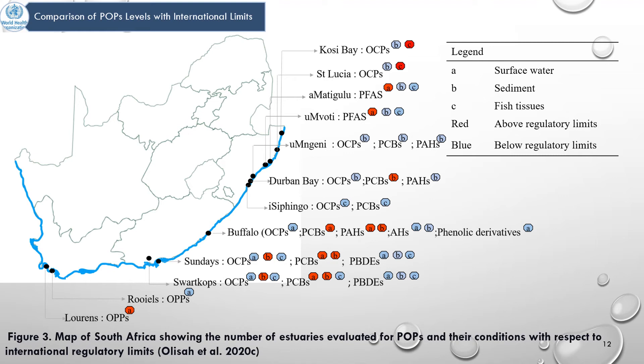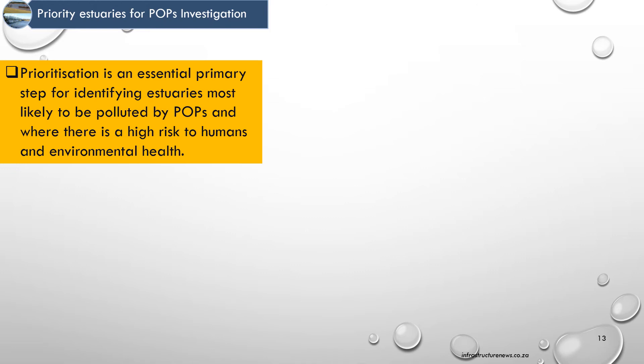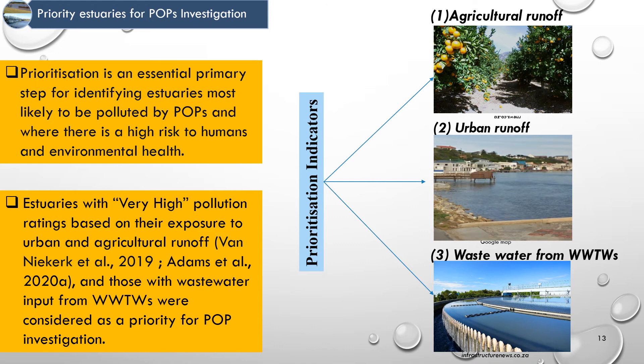We can see that very little research has been done on POPs levels in estuaries in South Africa. Prioritization is an essential step for identifying estuaries most likely to be polluted by POPs and where there is a high risk to humans and environmental health. In our recent article, estuaries with very high pollution ratings based on exposure to urban and agricultural runoff and those with wastewater input from wastewater treatment works were considered as priority for POPs investigation.